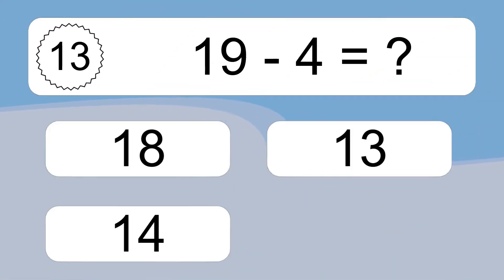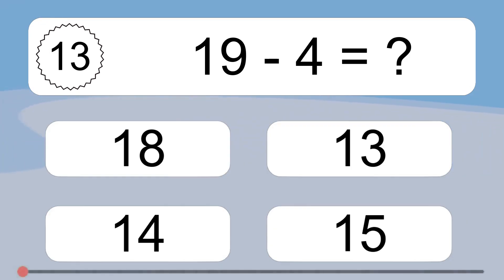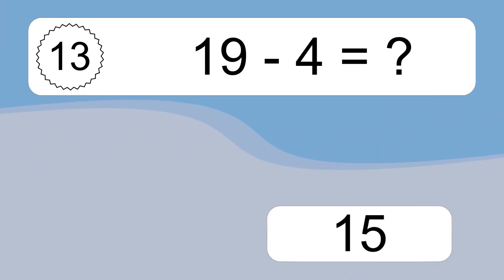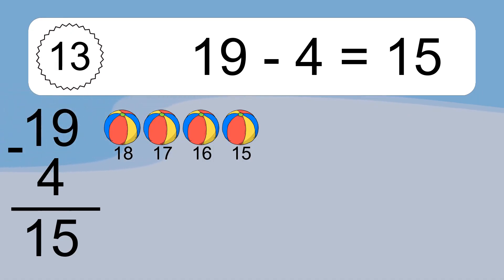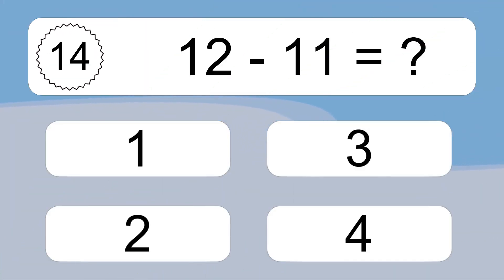19 minus 4 equals what? 19 minus 4 equals 15. Let's count it: 18, 17, 16, 15.